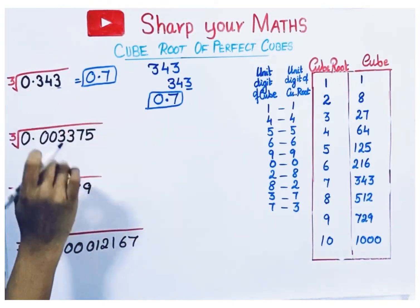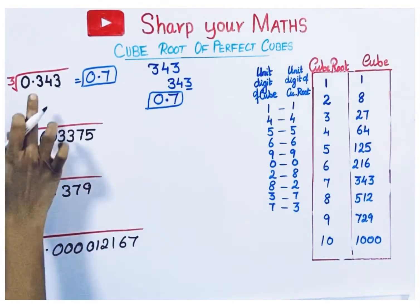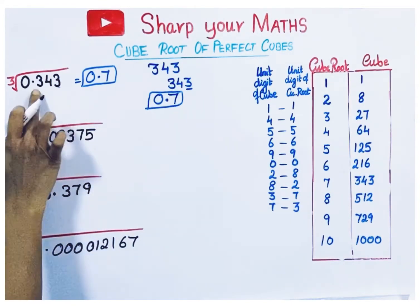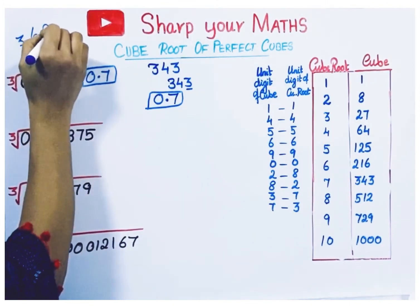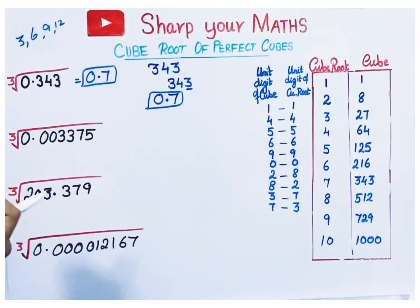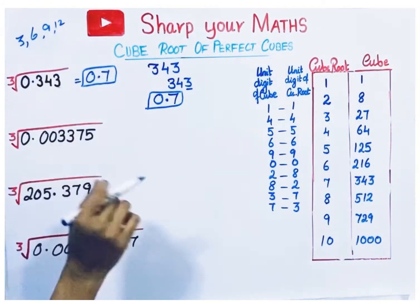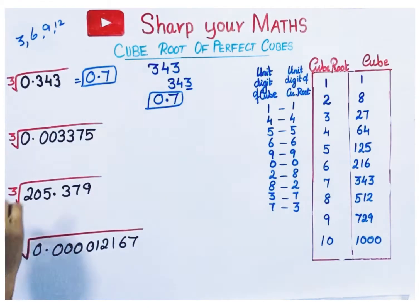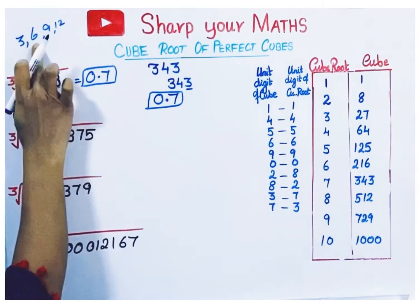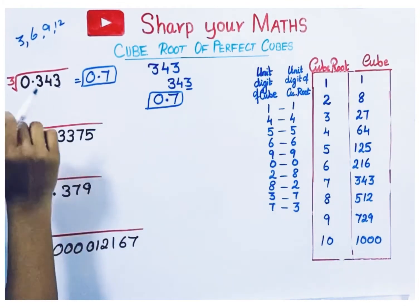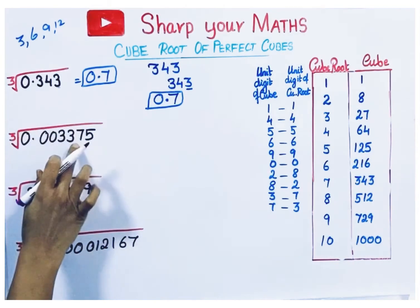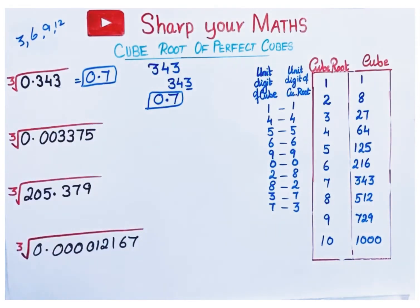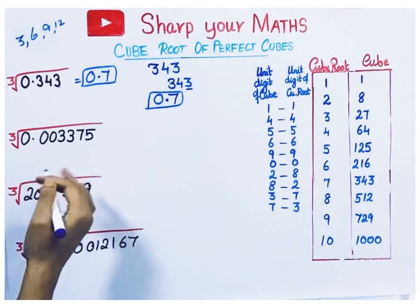This trick is applicable when the number of decimal places in the decimal number is a multiple of 3 — that is, 3, 6, 9, or 12 decimal places. If the decimal places are a multiple of 3, then you can apply this trick to find the cube root.